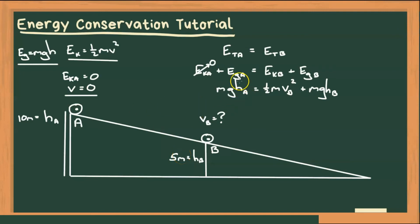So you wouldn't actually be able to calculate either its gravitational energy or its kinetic. But if you look and see that there is mass in every single term. So if I divide every term by M, which you can do in math, then mass will cancel. And we don't actually need to know the ball's mass to be able to solve for the velocity at B.